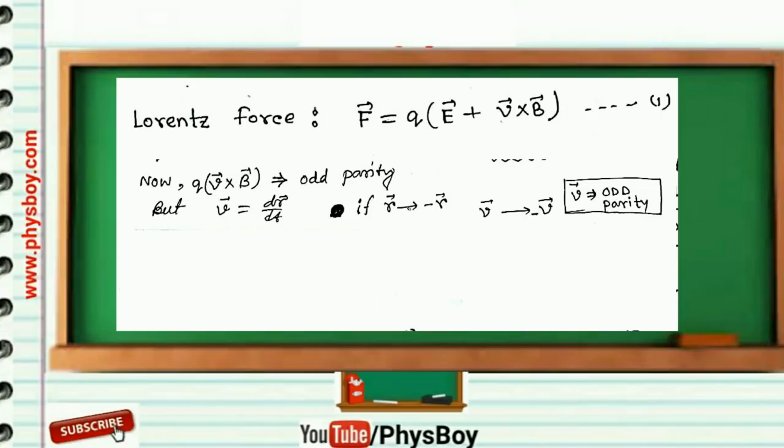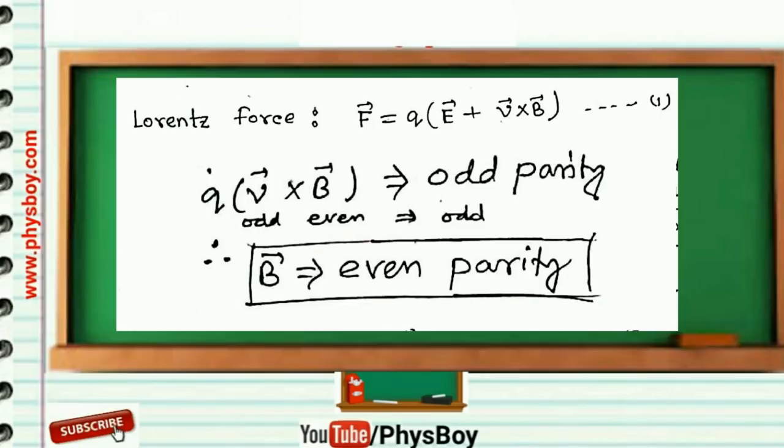So from this equation, we conclude that B⃗ has even parity under parity transformation.